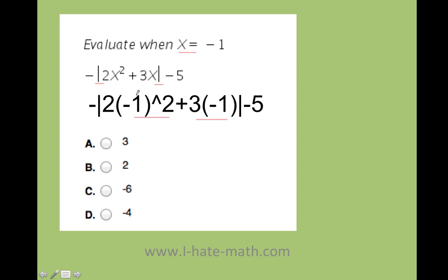Negative 1 times negative 1 is going to be 1. 2 times 1 is going to be just 2. Now, positive 3 times negative 1 is going to be actually negative 3. So I have the absolute value of 2 minus 3 minus 5.